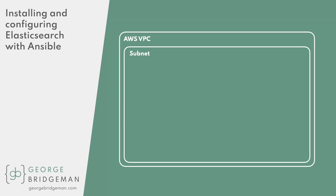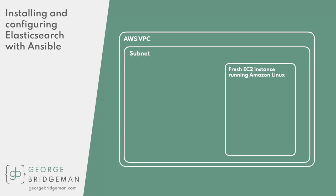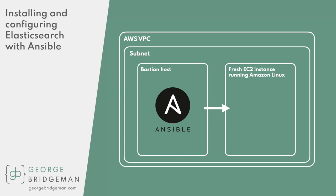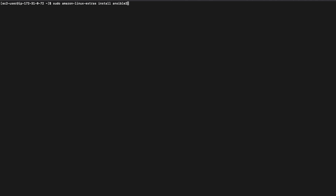I want to create a cluster, starting with a single node. The host is running, but it's completely fresh and doesn't have Elasticsearch installed yet. I'm going to be running Ansible on another EC2 instance inside AWS. This is called the Ansible control node. In my case, it's the bastion host I'm using to connect to the node. Now this isn't a good way to do this in production — Ansible should really run on its own host — but this will work fine for this tutorial. First things first, let's install Ansible.